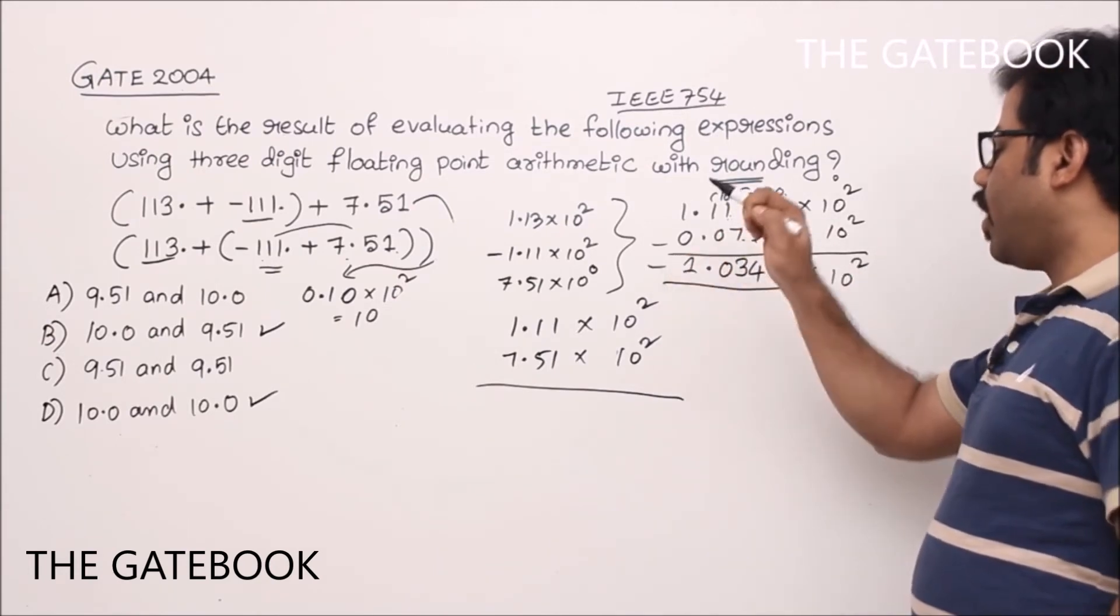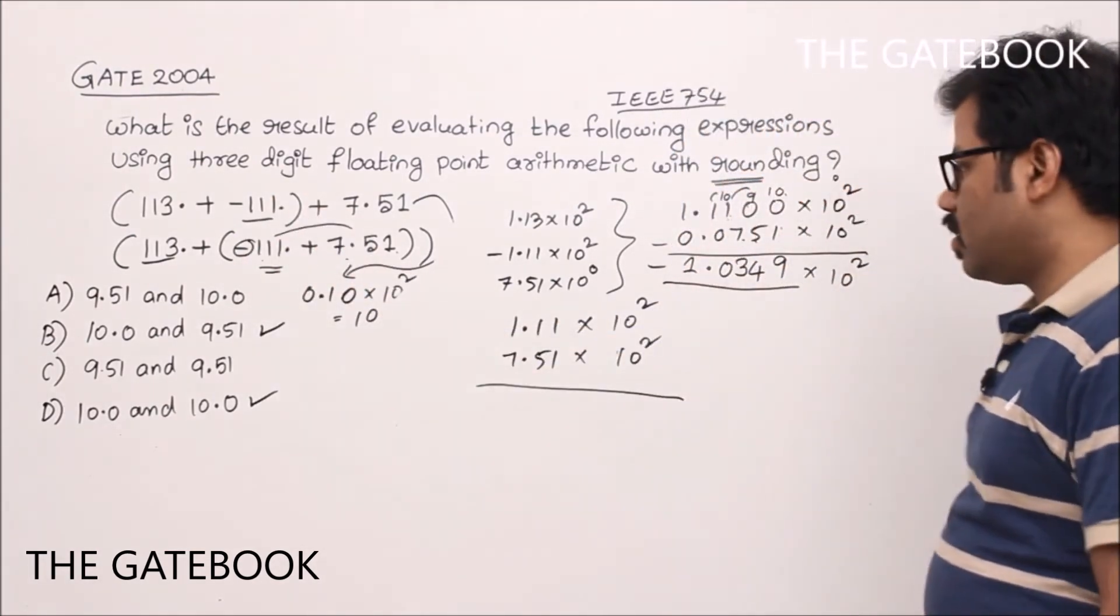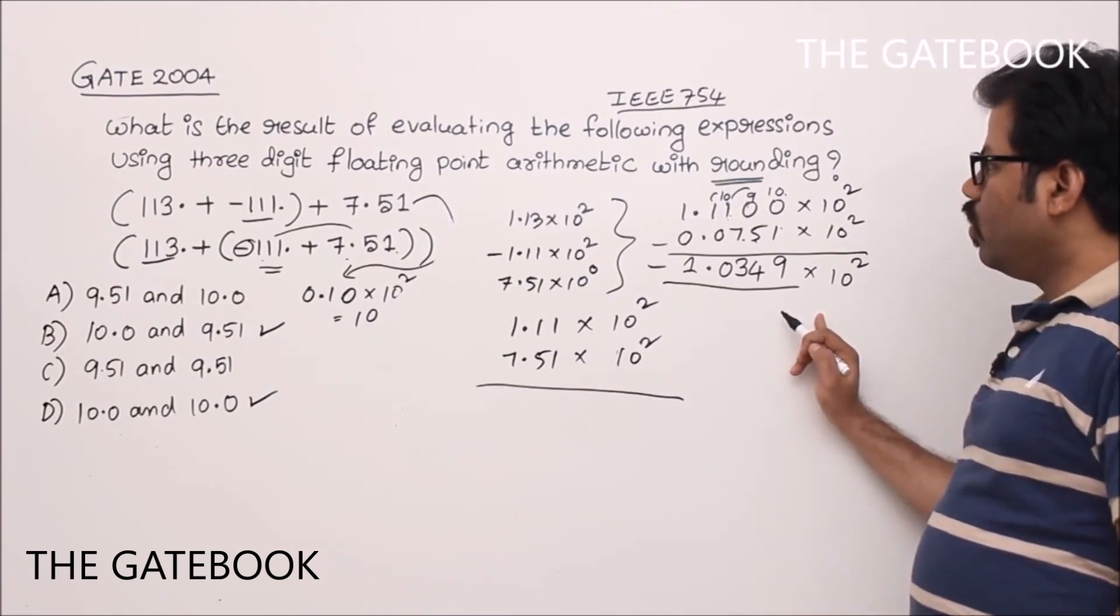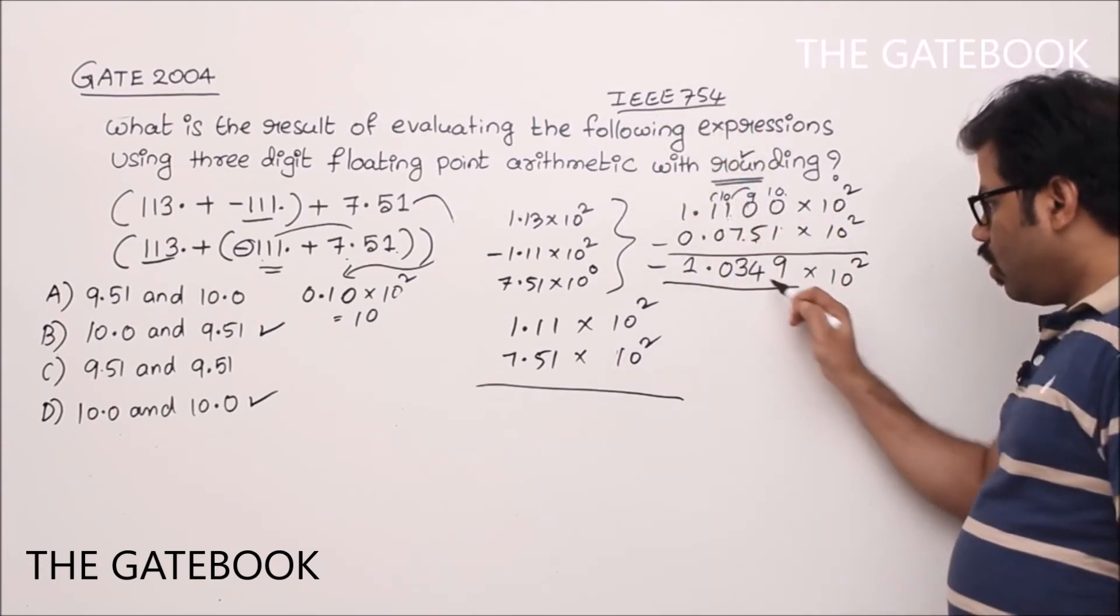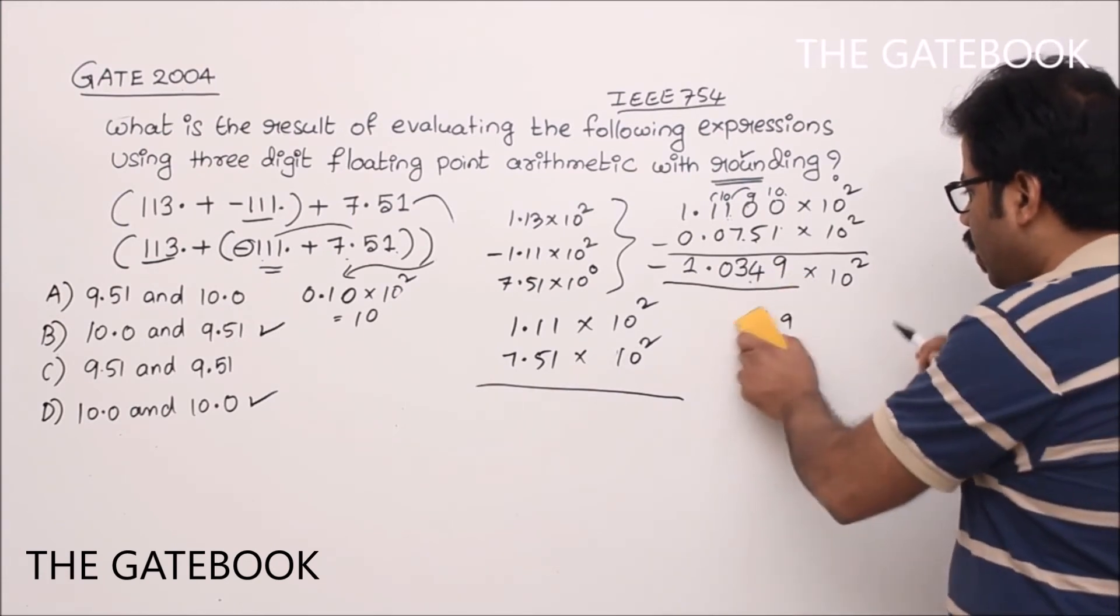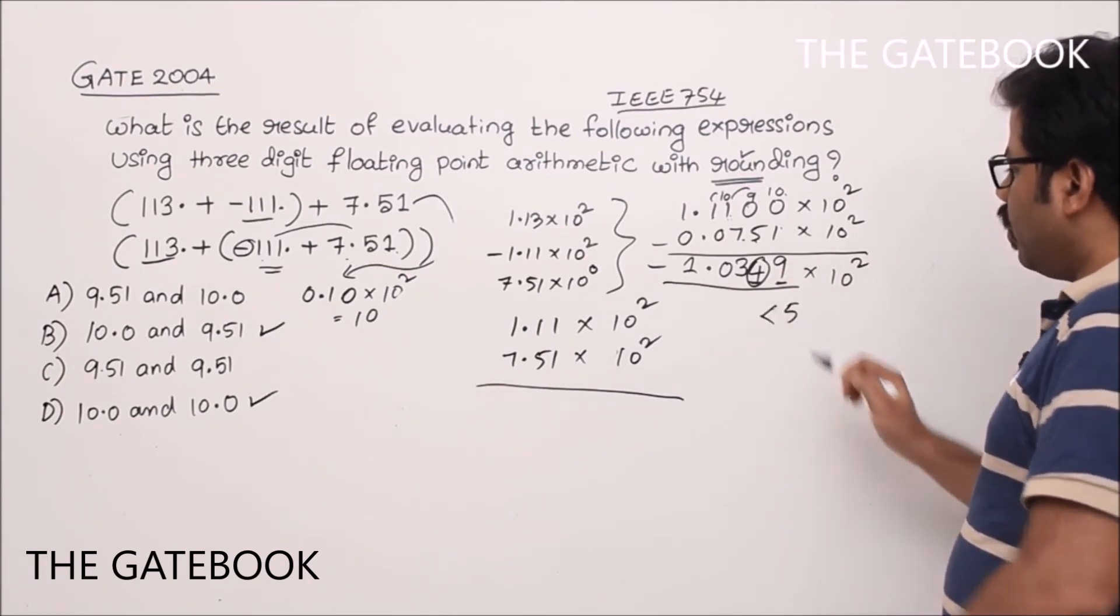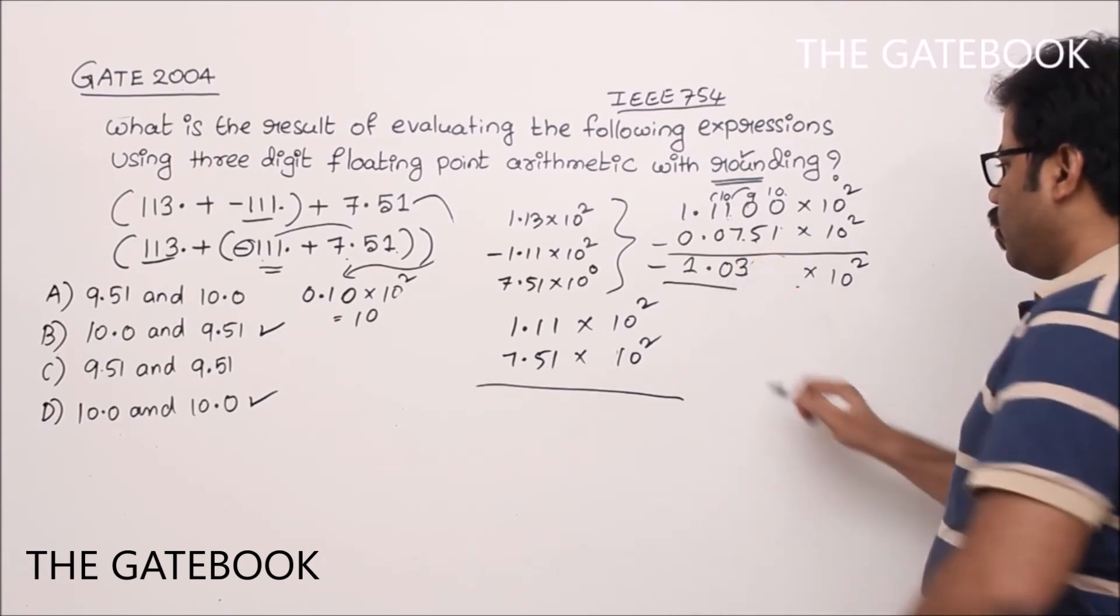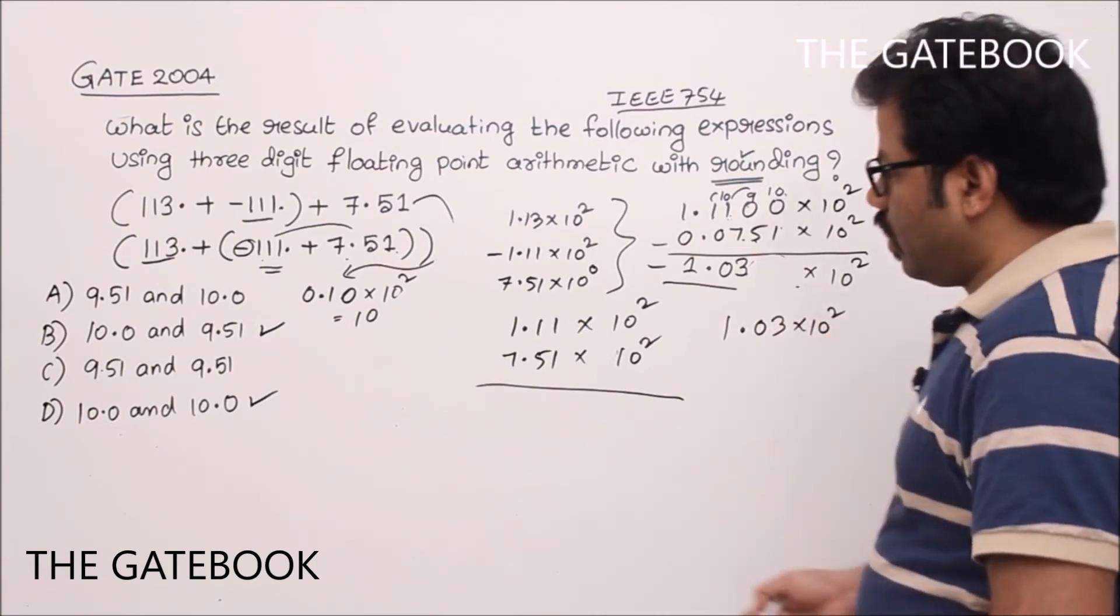Once it is done, what we are going to do? We are going to do rounding. This entire concept is about rounding. How to do rounding recall? Whenever you have 4, 9 to be discarded, in the discarded bits, 4 is less than 5. When you have a less than 5 numbers, truncation will take place. So we do truncation. You get 1.03 into 10 squared. That is nothing but 103.